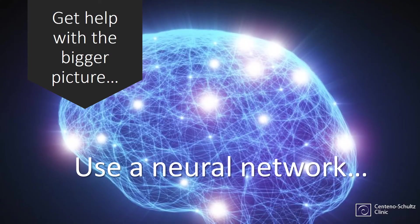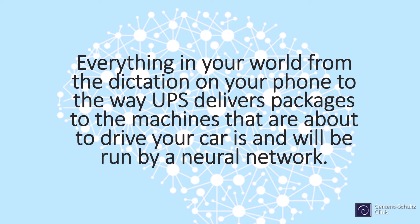One of those ways is called a neural network. What's a neural network, and why would you want to use that in science? Everything in your world — from the dictation on your phone to the way UPS delivers packages to the machines about to drive your car — will be run by a neural network. It's a type of software that's very good at learning, also called machine learning. The machine learns from patterns in the data rather than being hard programmed.